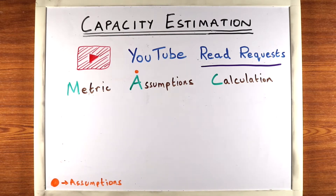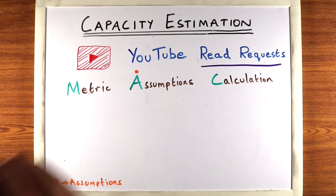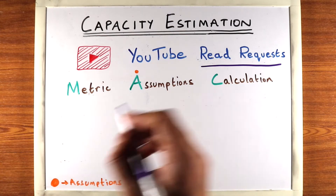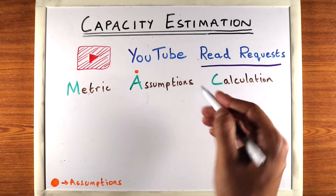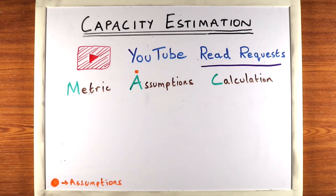Capacity estimation is something we usually recommend not spending too much time on in system design interviews. We highly recommend you do this as quickly as possible in an actual interview, if required by the interviewer. We'll follow our three-step approach: defining the metric, making assumptions about the system, and then calculating the actual metric.